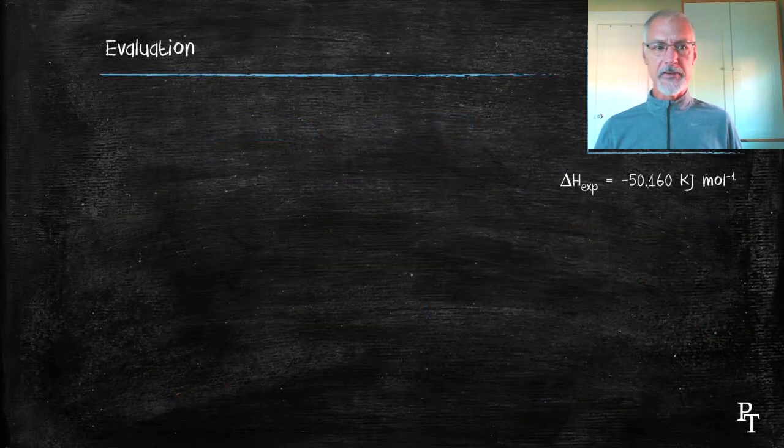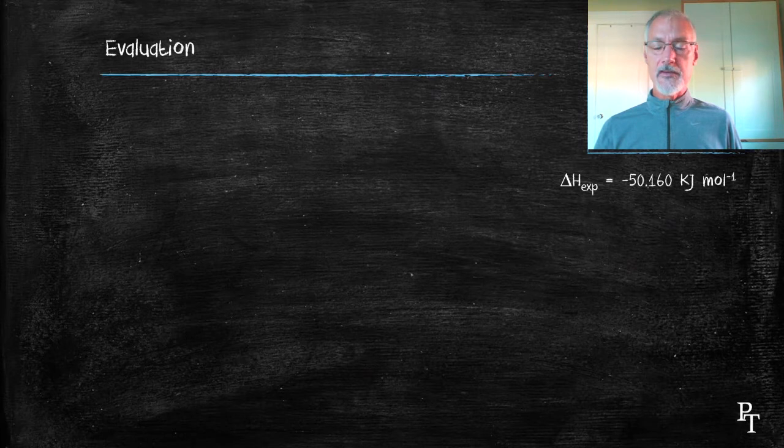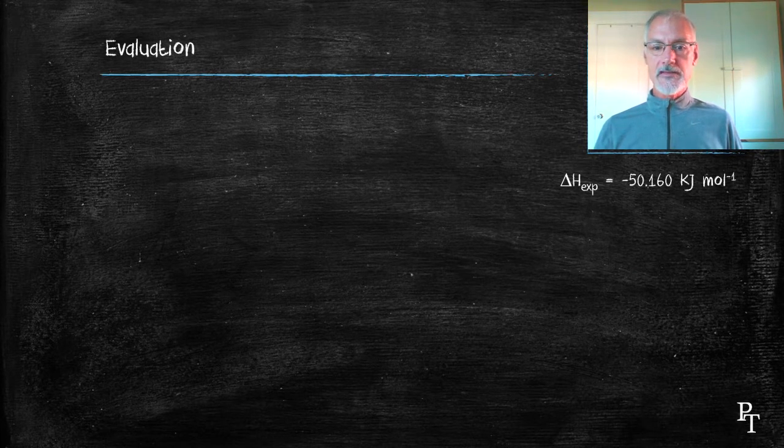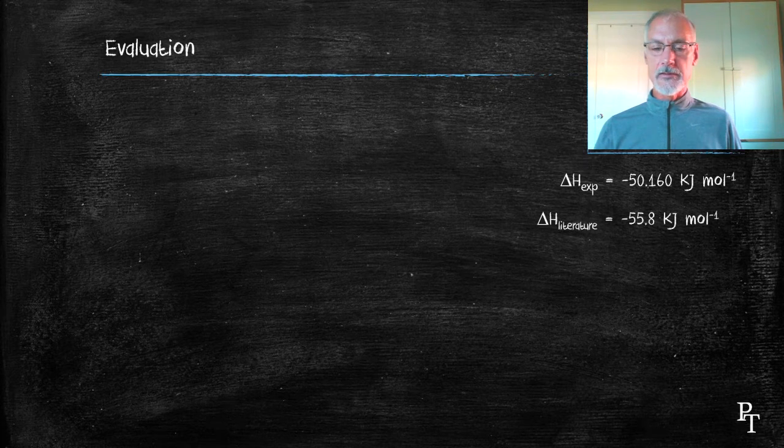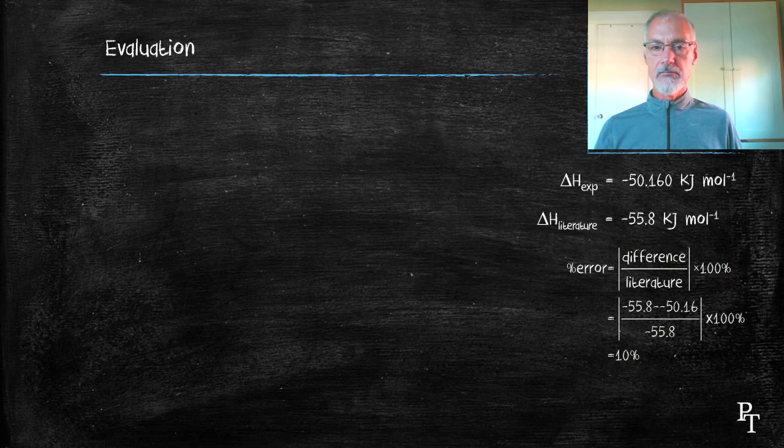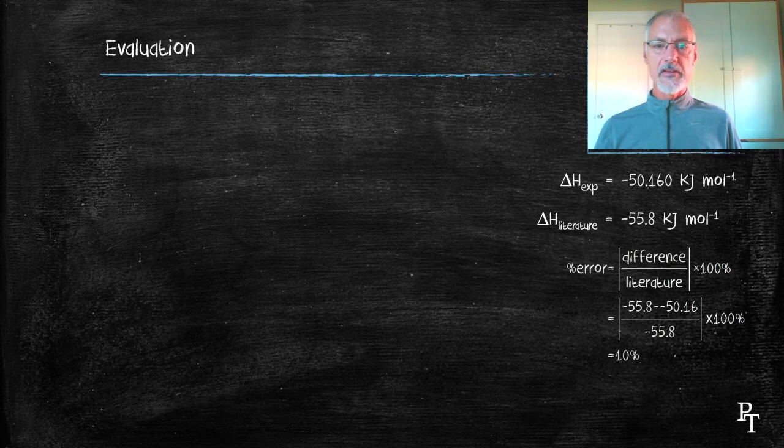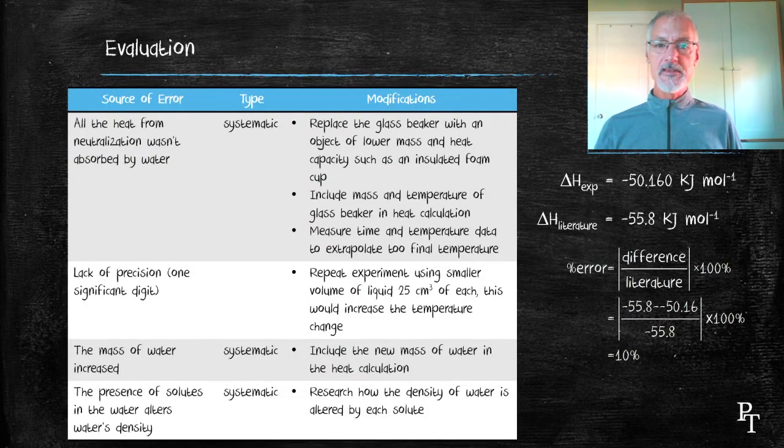Let's evaluate some of the things in this experiment. First off, there's the experimental value I obtained, unrounded, and if I consult the literature, I should get negative 55.8 kilojoules. It means that my percentage error is about 10%. Here are some things that could lead to that problem.